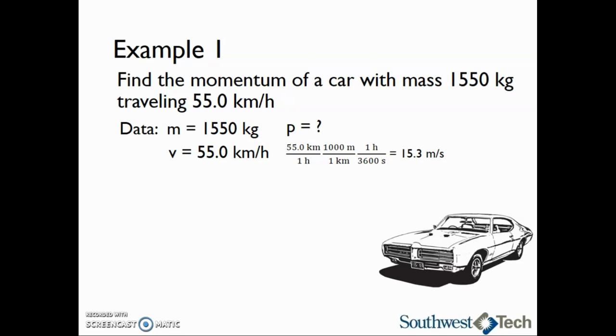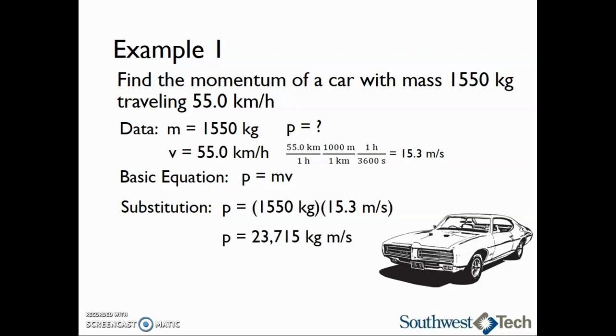Now that we have the correct units on velocity, we can go ahead and find a basic equation to solve for momentum. The basic equation is p equals m times v. This is also the working equation since we are trying to find momentum. Next, we can substitute our data into the problem. The mass is 1550 kilograms and the velocity is 15.3 meters per second. Multiplying, we see that the momentum is 23,715 kilogram meters per second. However, we need an answer with three significant digits. So our final answer for the momentum of this car is 23,700 kilogram meters per second.